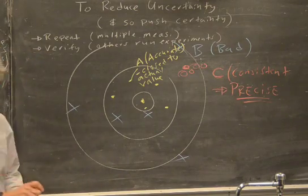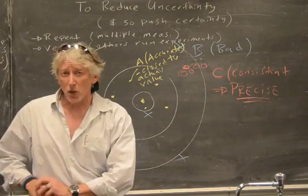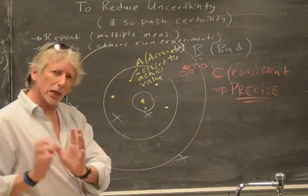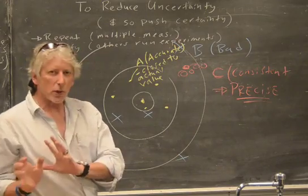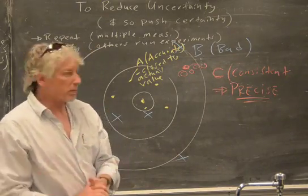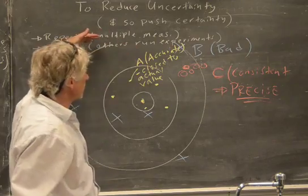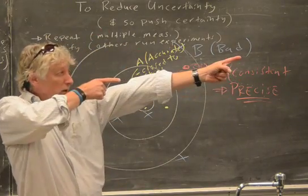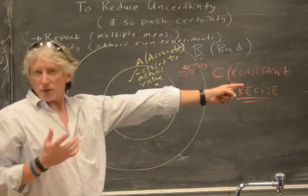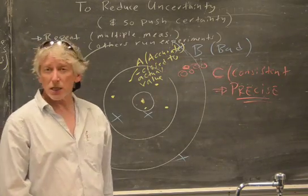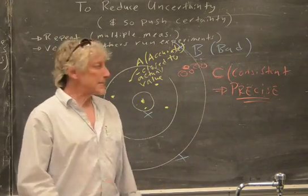Precision pays. Some other group might come along and maybe they'll use your equipment, tweak it a little bit, and change the value. But if you're precise, you're not all over the map — people tend to trust that data. If you're taking an archer and you say hey, you're shooting a little to the right — just adjust like that and you're good. Then they're great. So C makes the team. Since we can't know the actual value, we look for precision and we push the precision.